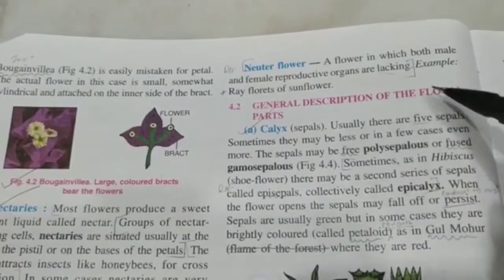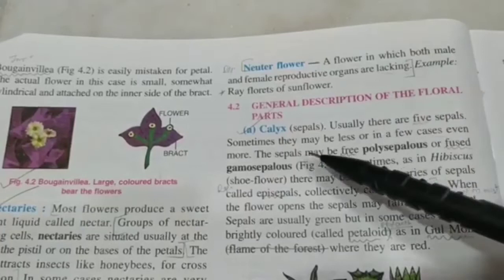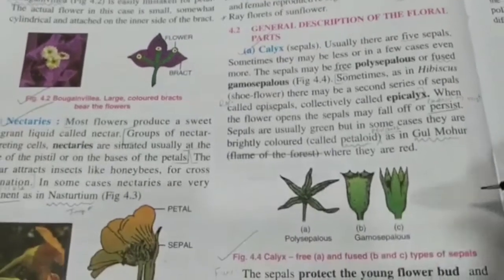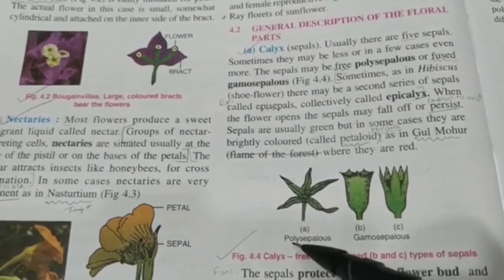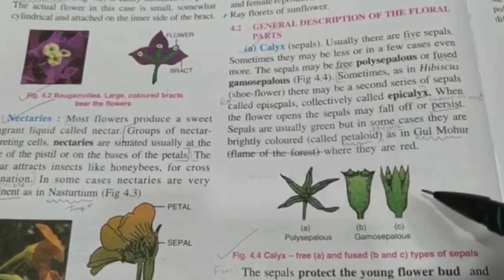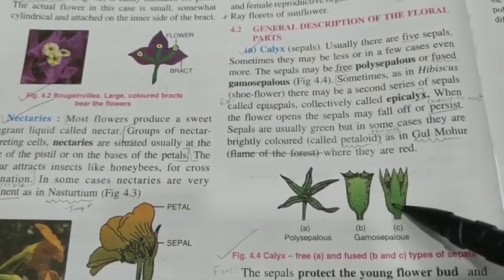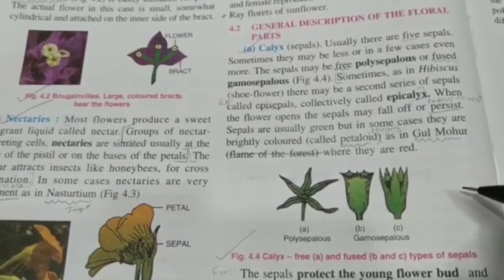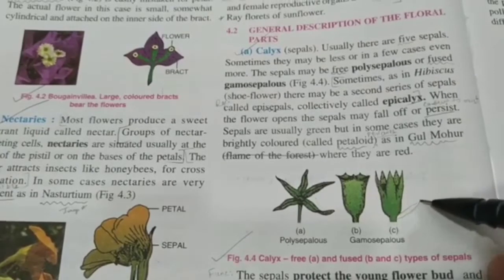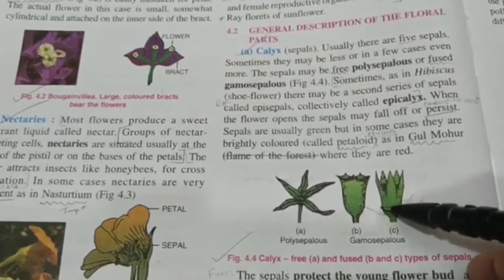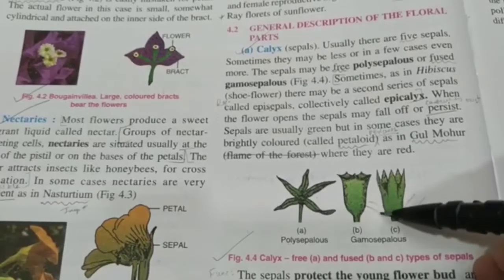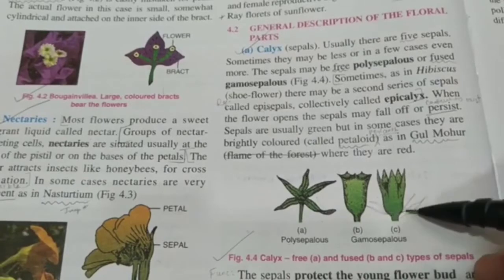Now let's look at the general description of the floral parts. The calyx usually has five sepals, which are green. If the sepals are free, they are called polysepalous; if they are fused together, they are called gamosepalous. In some flowers like hibiscus, there may be a second series of sepals just below the first — these are called epicalyx. So that's yet another additional whorl in particular flowers.